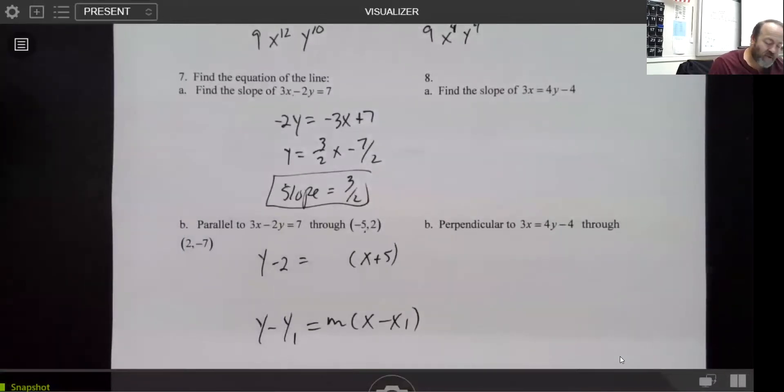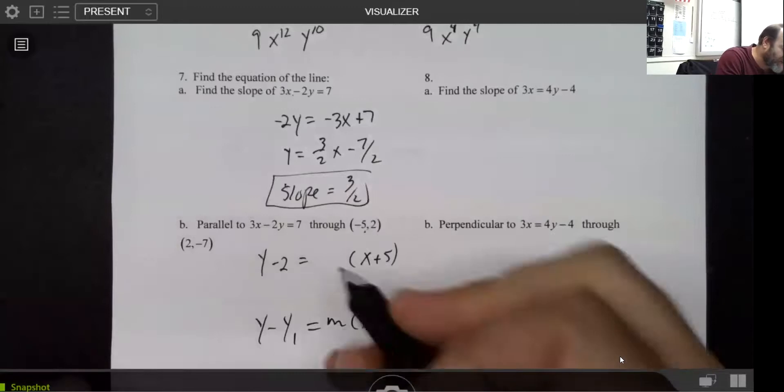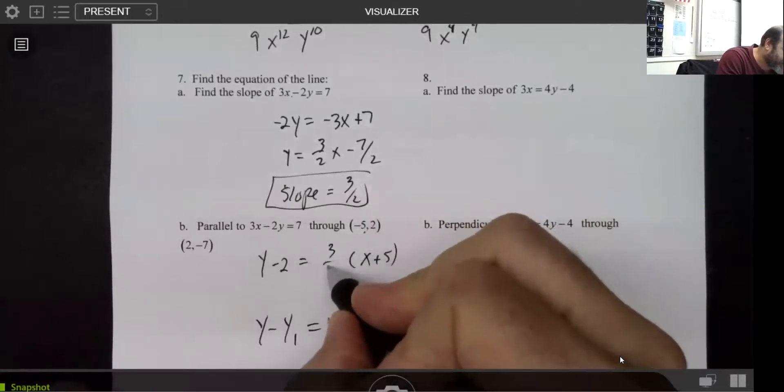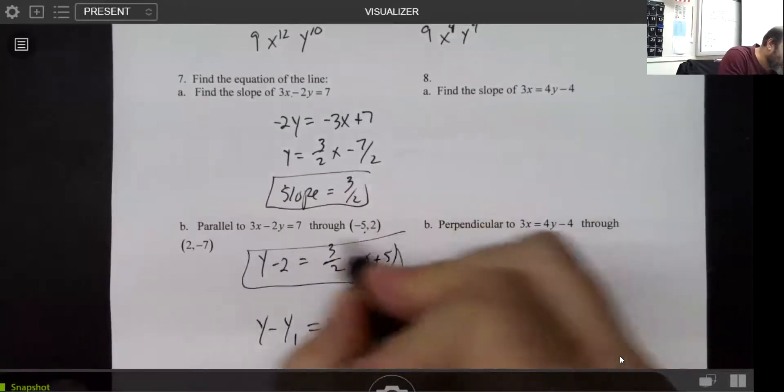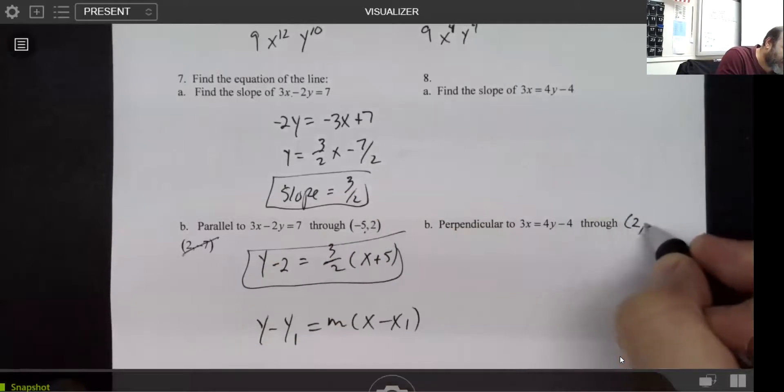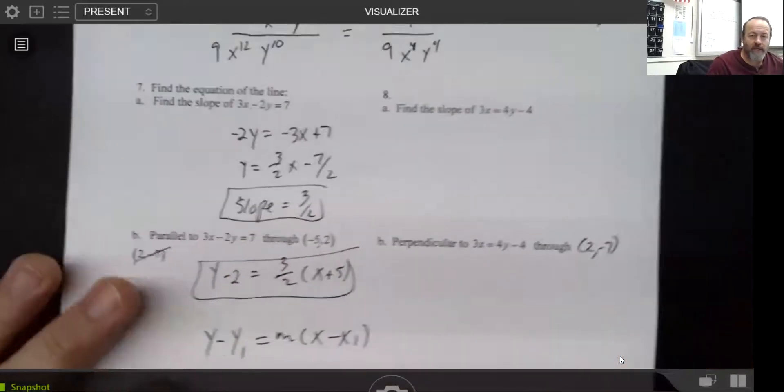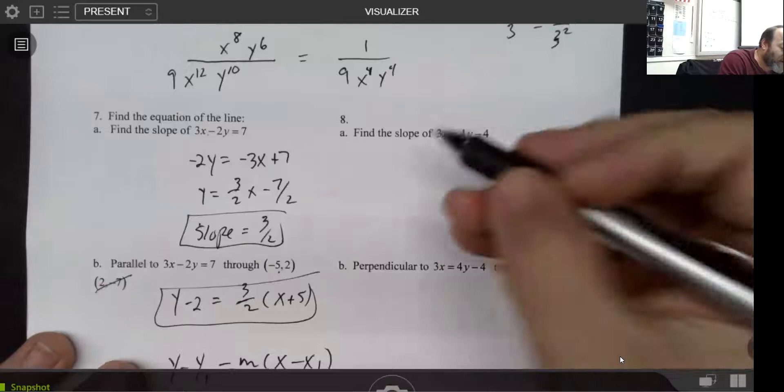But then remember that if ever lines are parallel, then they have exactly the same slope. So this 2 over negative 7 is supposed to be part of this question. I just kind of spaced things out a little bit.